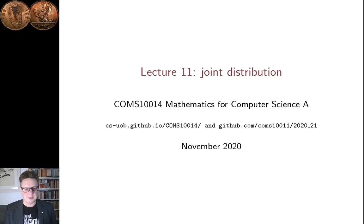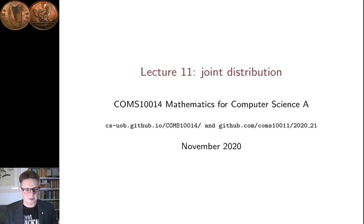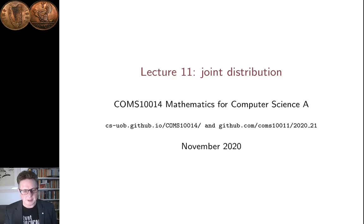Hi, I'm Connor Hahn. This is Lecture 11 in the Probability and Combinatorics section of our unit, Mathematics for Computer Science A. In this lecture, I will be talking about joint distribution. I'll be giving an example with random variables and using that to introduce the joint distribution.